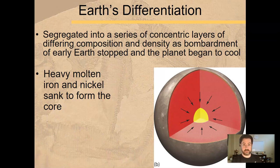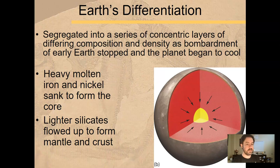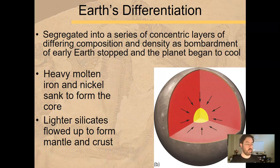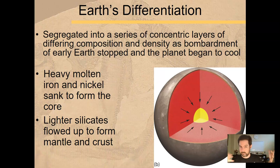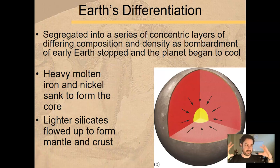While the lighter stuff kind of floated to the surface, Earth began to differentiate as it started to calm down. The heavier iron and nickel sank toward the core. The core of the Earth is now primarily comprised of heavy elements like iron and nickel, whereas the crust — the lighter, less dense stuff — floated to the top. Heavier stuff sinks, lighter stuff floats.